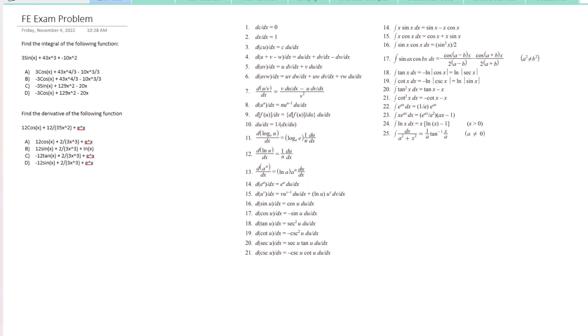The first problem is find the integral of the following function: 3sin(x) + 43x³ - 10x². Let's go to the solution space here and start with the trigonometric function.